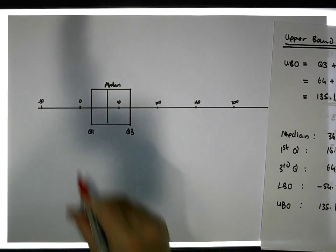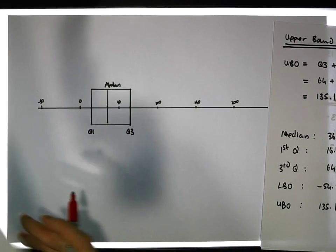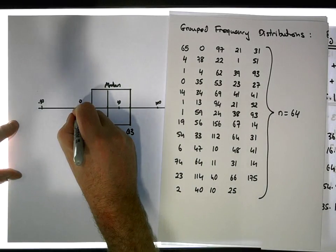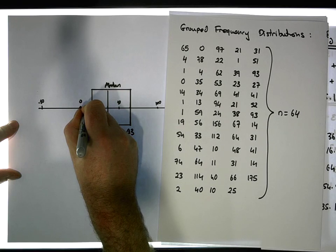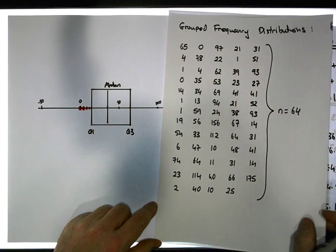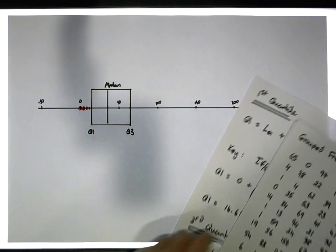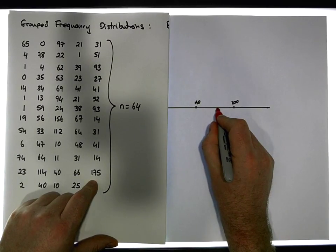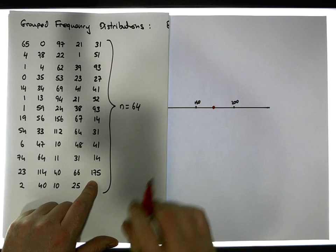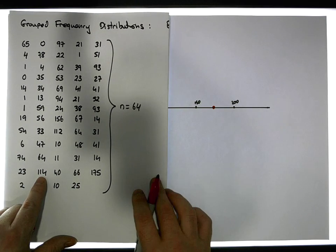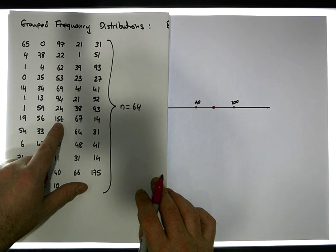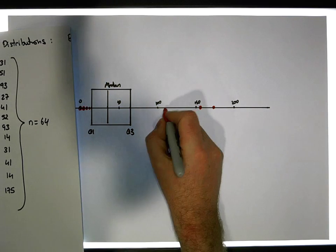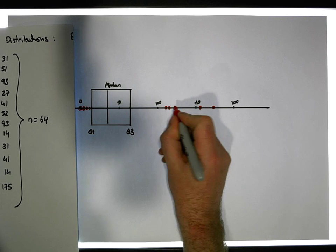I'm going to put the smaller values from my data set onto this scale. The smallest values are zero, one, two, three. And the larger values — 175, 156, 114, 112 — I'm also going to plot those onto this scale, as they'll be important in a moment.